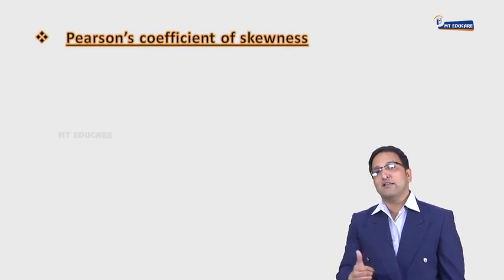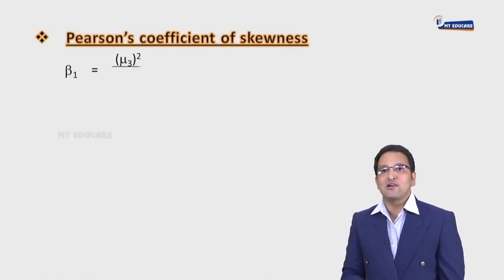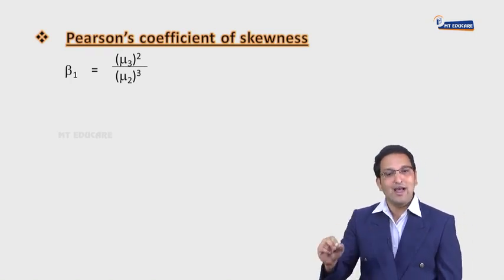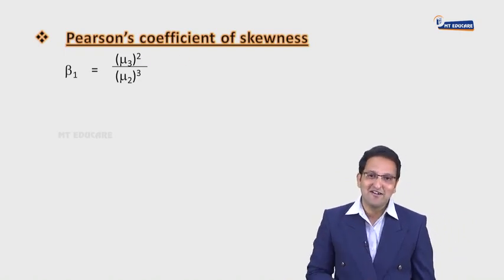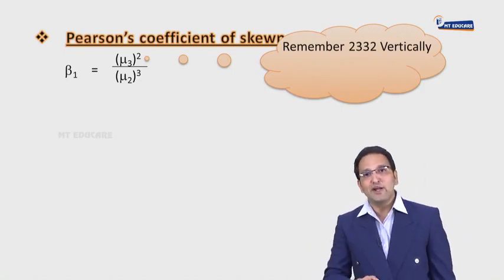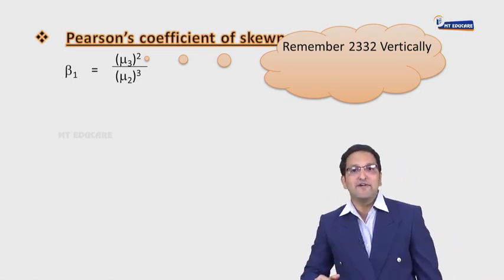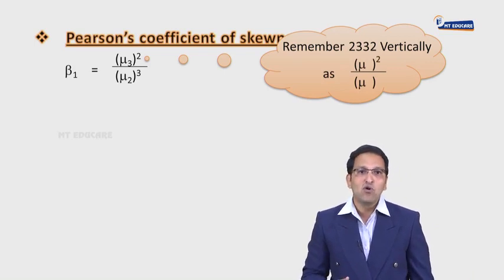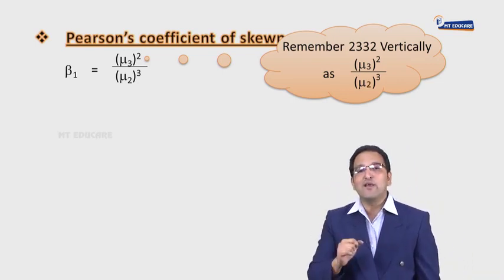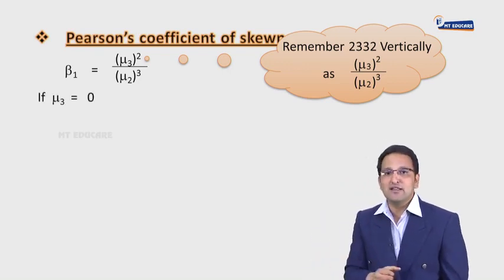Let's check the next formula: Pearson's coefficient of skewness, that is beta1. Beta1 = Mu3² / Mu2³, where Mu2 is the second moment and Mu3 is the third moment. To remember: use the pattern '2332' vertically — Mu3 (power 2) divided by Mu2 (power 3). This gives Mu3 squared divided by Mu2 cubed. This is Pearson's coefficient of skewness. If Mu3 = 0, then the distribution is symmetric. If Mu3 > 0, then the distribution is positively skewed. If Mu3 < 0, then the distribution is negatively skewed.